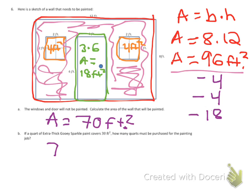So we're going to take 70 feet squared and we're going to divide it by 30 feet squared. The units cancel out, the zeros cancel out, so we've got 7 over 3.